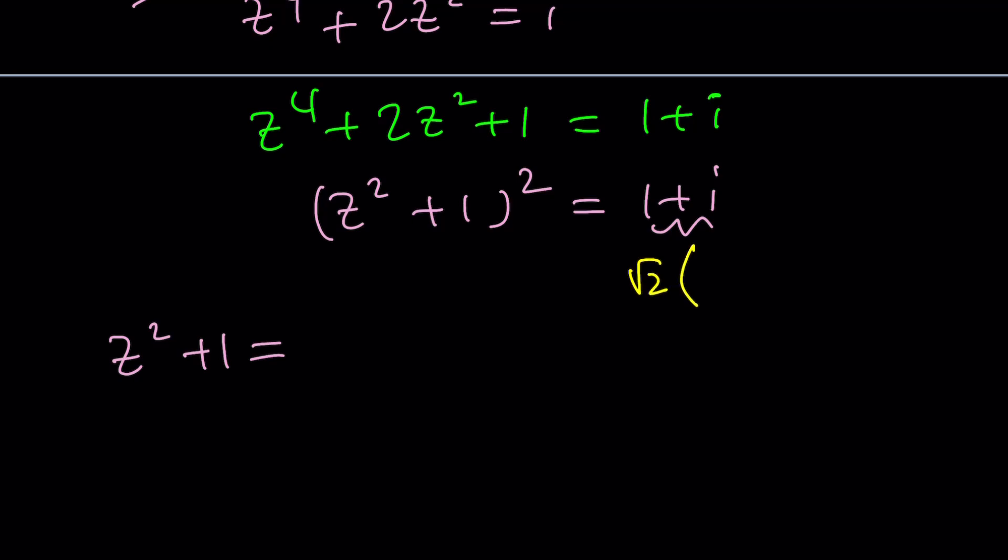To square root 1 plus i, I can write in polar form. So square root of 2 times root 2 over 2 plus root 2 over 2 i, or root 2 times e to the power i pi over 4. So i pi over 4. And then if you square root it, it's going to be the fourth root of 2 e to the power i pi over 8.